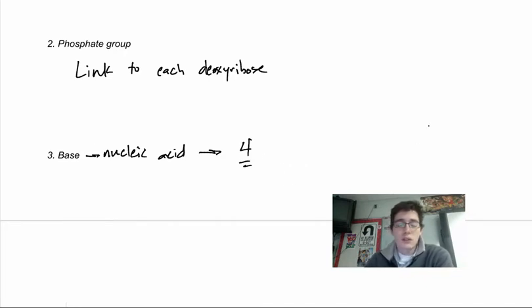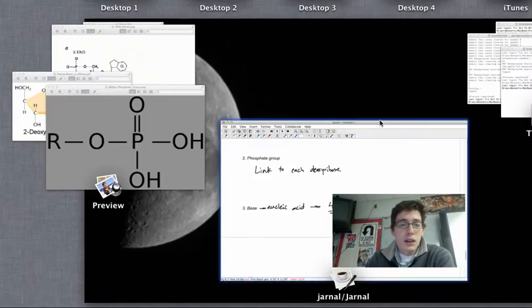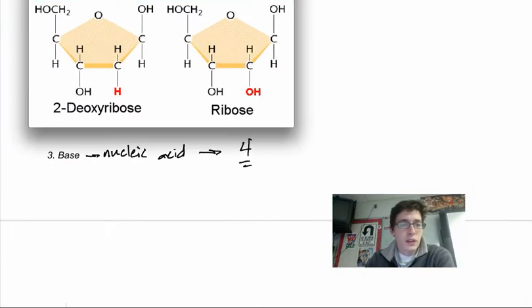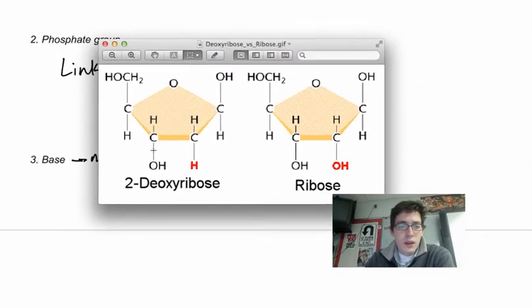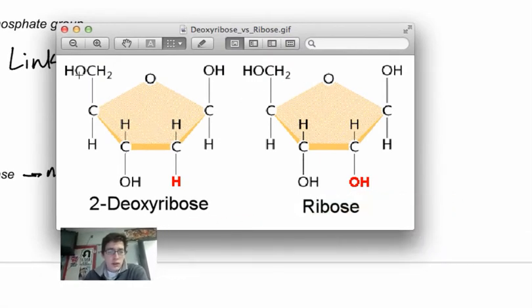So let's take a look at ribose versus deoxyribose. Look here on the ribose on the right-hand side. Remember it's a five-carbon chain: one, two, three, four, five. And it's in a pentagon shape. This is a pentose. And we've got H's and OH's off of everything.